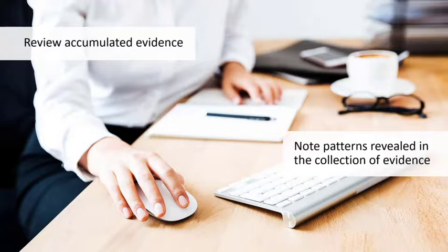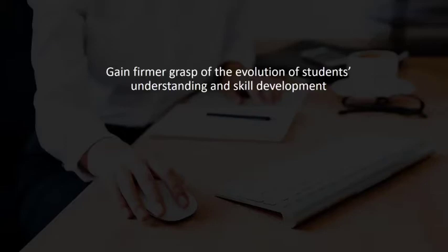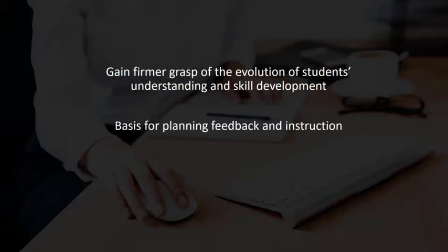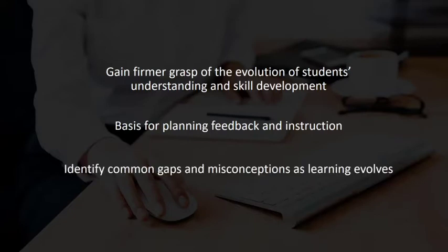Are there common points where a number of students are having difficulty? Does the evidence suggest that students be grouped to differentiate instruction to individual needs? These analyses may give teachers a firmer grasp of the evolution of students' understanding and skill development, and reveal where different students or subgroups may be in their progress towards the lesson goals and success criteria. This information can be the basis for planning targeted feedback and instruction in subsequent lessons, as well as helping teachers better understand what learning looks like and what gaps and misconceptions may be common as student learning evolves.